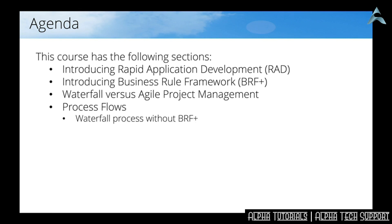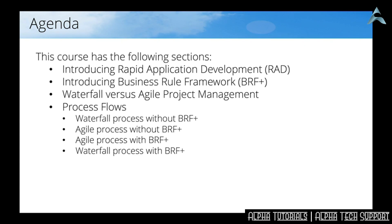I start with the explanation of a waterfall process without BRF Plus, then an agile process without BRF Plus, and then the big changes between the two approaches. After that, I'll show the agile process with BRF Plus, highlighting the difference between agile with or without rapid application development. Then the last process I will show is waterfall with BRF Plus, highlighting that even in waterfall you can still apply rapid application development. After discussing all these flows, there will be a summary of the four approaches so you get a good indication of the pros and cons for each process.